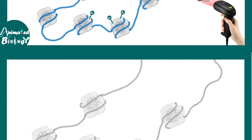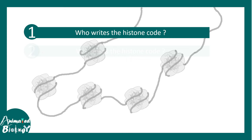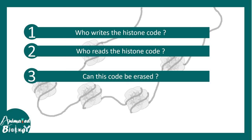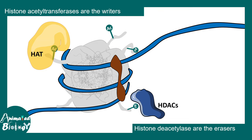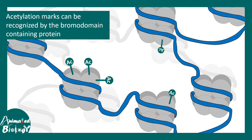There are three important questions to understand: Who writes the histone code? Who can read the histone code? And can the histone code be erased? The writers are histone acetyltransferases. The histone code can be erased by histone deacetylase. And the histone code can be read by proteins that have the bromodomain — a specific domain that binds to acetylated histones.